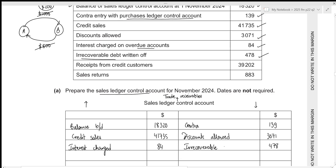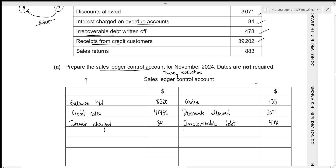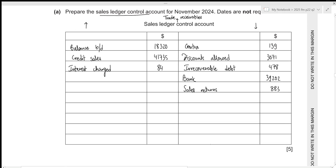Irrecoverable debt means the customer is unable to pay us back, so we write it off from trade receivables. Then we have receipts from credit customers — once a credit customer pays us, trade receivables decrease, so we record this on the credit side. Always remember to record receipts and payments under the heading of 'bank', since all of these are processed through the bank account. Then we have sales returns, which reduce trade receivables because the customer no longer needs to pay for goods returned to us — so 883 goes on the credit side. We've recorded everything; now we need to figure out the closing balance, which will be on the credit side for an asset account.